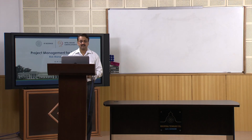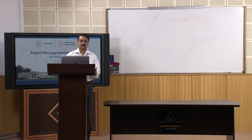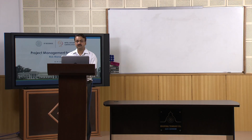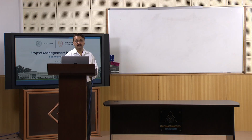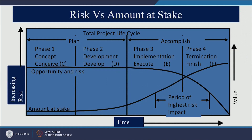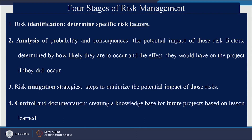As we saw in the previous class, you need to find out the probability of occurrence of an event which would negatively affect your project, and what would be the impact of that risk. So project risk equals the probability of an event and the consequences of that event. There are four stages of risk management: identify risk, analyze probability and consequences, risk management strategies, and control and documentation.